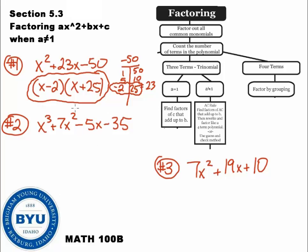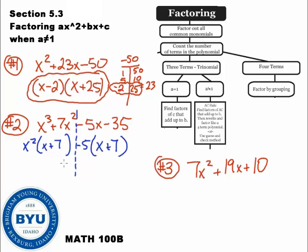Problem 2: count the terms — 1, 2, 3, 4 terms. This is factoring by grouping. Take out x squared from the left, leaving (x+7). Take out negative 5 from the right, leaving (x+7). Pull out the common parenthesis (x+7), and write what's left over: (x²−5). Answer: (x+7)(x²−5).